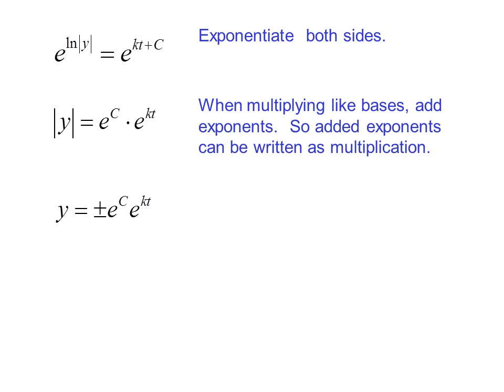We can drop the absolute value signs and write the right-hand side as plus or minus e to the c times e to the kt. But since e to the c is a constant, whether it's positive or negative, we let plus or minus e to the c equal a, a new constant.